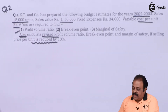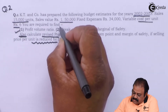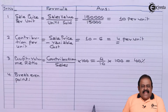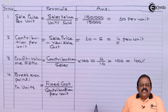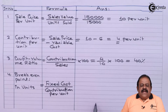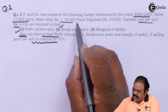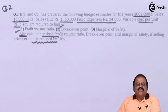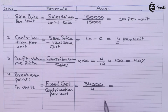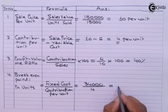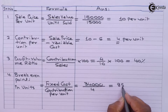Next we calculate break-even point. Break-even point can be calculated in units as well as in rupees. In units, the formula is fixed cost divided by contribution per unit. Fixed cost is ₹34,000 and contribution per unit is ₹4, so break-even point is 8,500 units.